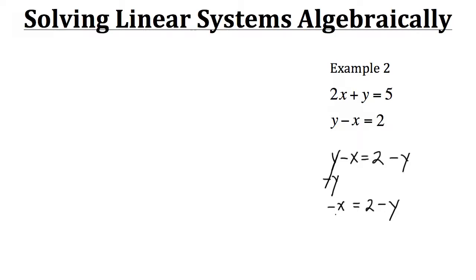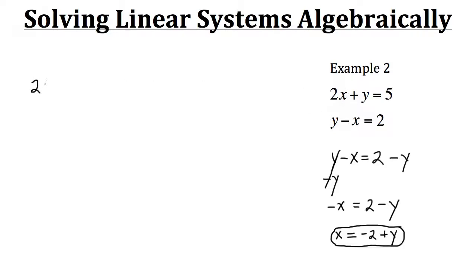Multiplying both sides by negative 1, our negative x becomes positive x, the positive 2 becomes negative 2, and the negative y becomes positive y. So x is equivalent to negative 2 plus y. It's important that when we substitute this in, we don't put it back into the second equation — we must plug it into the first equation instead. So we have 2 times the quantity (negative 2 plus y), plus y, equals 5.